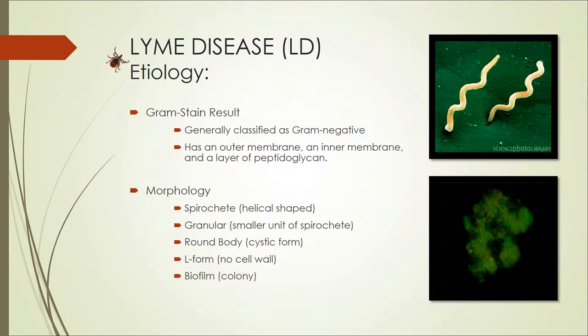Borrelia burgdorferi produces a weak gram-negative stain. Because of this, it is sometimes considered to be neither gram-positive nor gram-negative. Since the bacterium has an outer membrane, inner membrane, and a layer of peptidoglycan, it is generally considered gram-negative.